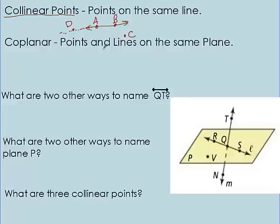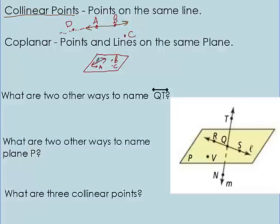Coplanar means points and lines in the same plane. So you draw that rectangle shape again — or a rhombus — and draw points and lines on the same plane. I'll put a point A and point B; they're all on this plane, and point C — these are all coplanar because they're on this plane. I could draw a line right here, and since it's on the plane, it is coplanar with both of these points.